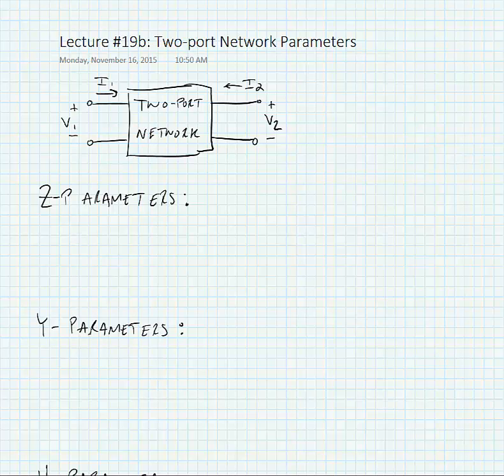In order to analyze feedback, we're going to use what are called two-port network parameters to aid in figuring out what the loading from the feedback network is on the amplifier circuit and also to figure out what the feedback factor beta is.